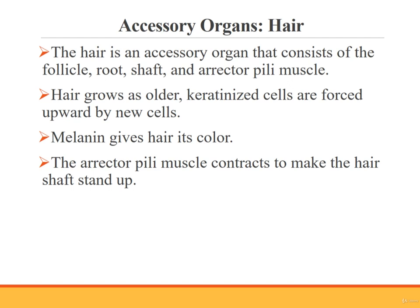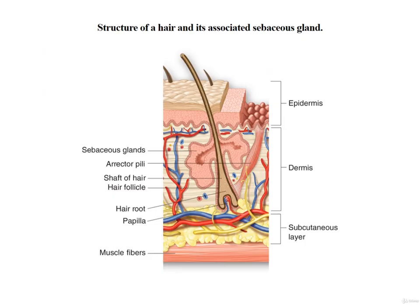Let's start with the hair. The parts of the hair are the hair follicle, the hair root, the hair shaft, and the erector pili muscle. The formation of hair is similar to the growth process in the epidermal layer of the skin. The deeper cells in the hair root force older keratinized cells upward, forming the hair shaft, which grows toward the surface within the hair follicle. Melanin gives hair its color. Each hair has a slip of smooth muscle attached to it called the erector pili muscle — when this muscle contracts, the hair shaft stands up, causing goosebumps.